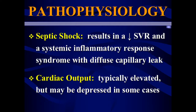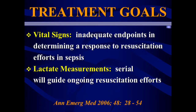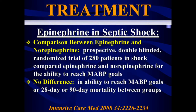Septic shock involves a reduction in systemic vascular resistance, the same inflammatory cascade with interleukin-6 causing vasodilatory shock, and typically elevated cardiac output when we see these patients in the ED. Vital signs are inadequate endpoints for determining response to circulation. A familiar scenario: give a fluid bolus, blood pressure comes up, then goes back down. Just because the blood pressure came up and heart rate came down doesn't mean the job is done. Lactate clearance is a marker for patients more likely to survive their hospitalization.